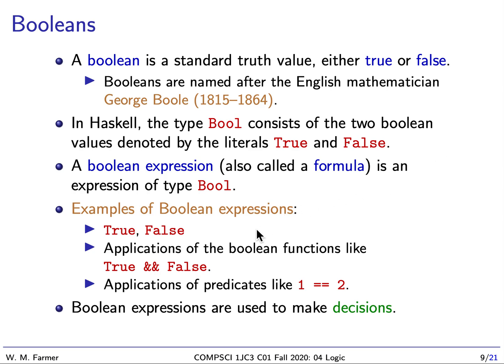Here are some examples of Boolean expressions. There are the literals true and false we've just mentioned. There are applications of Boolean functions like AND, which we can apply to true and false. And there are applications of predicates like equality, which we apply to one and two. Boolean expressions are absolutely crucial for a programming language because we need to make decisions — we need to decide what code to execute and what code not to execute in certain situations.